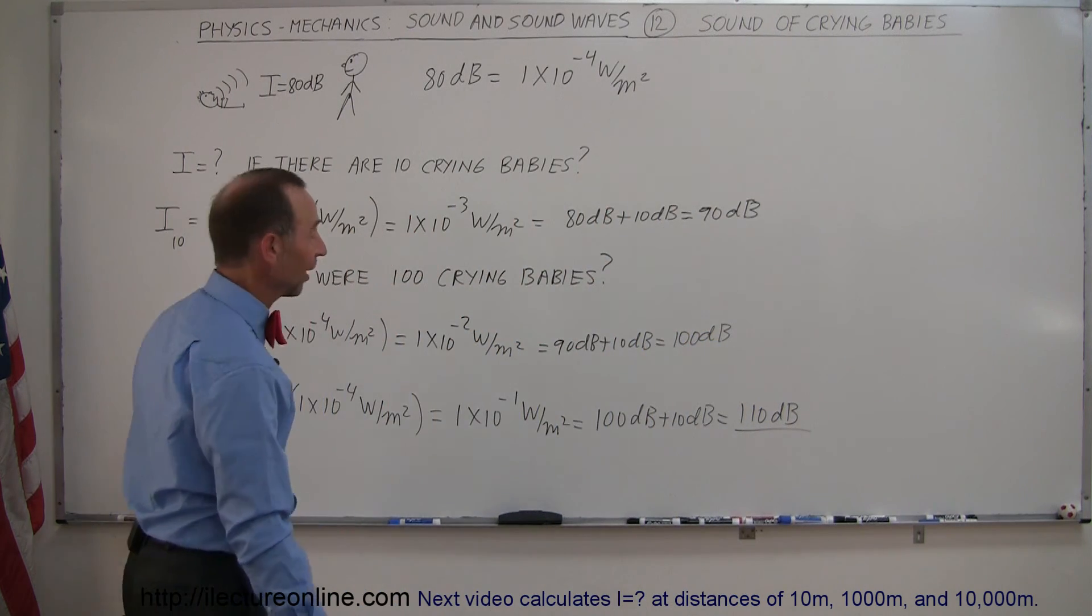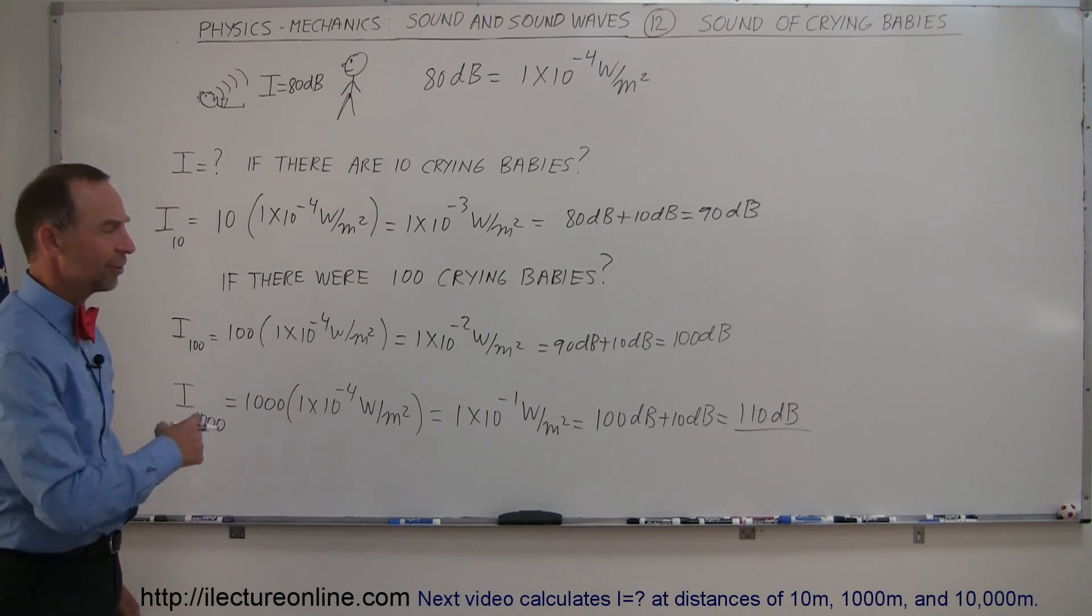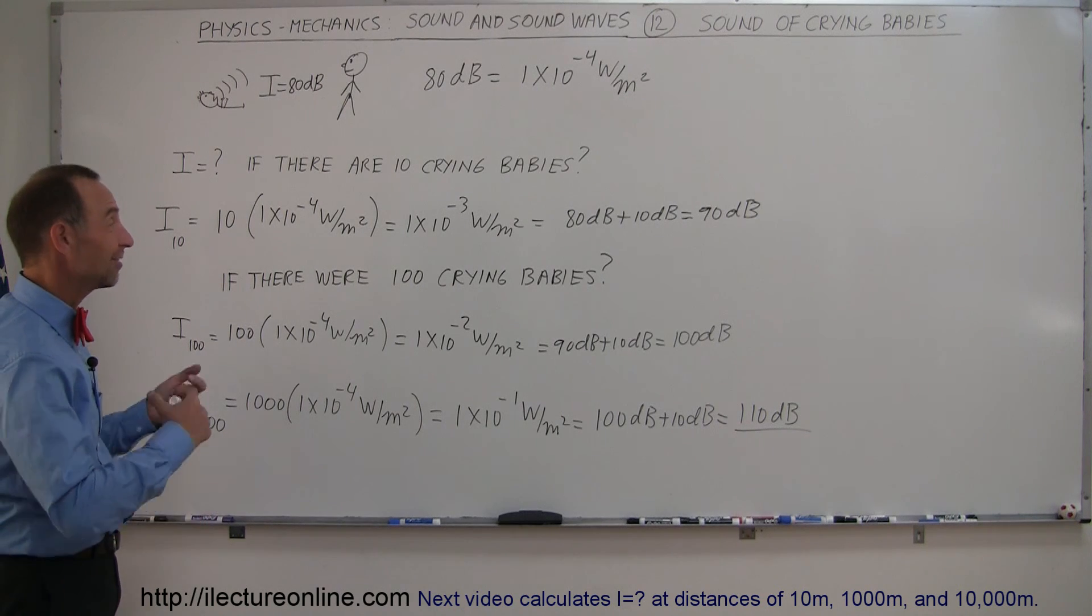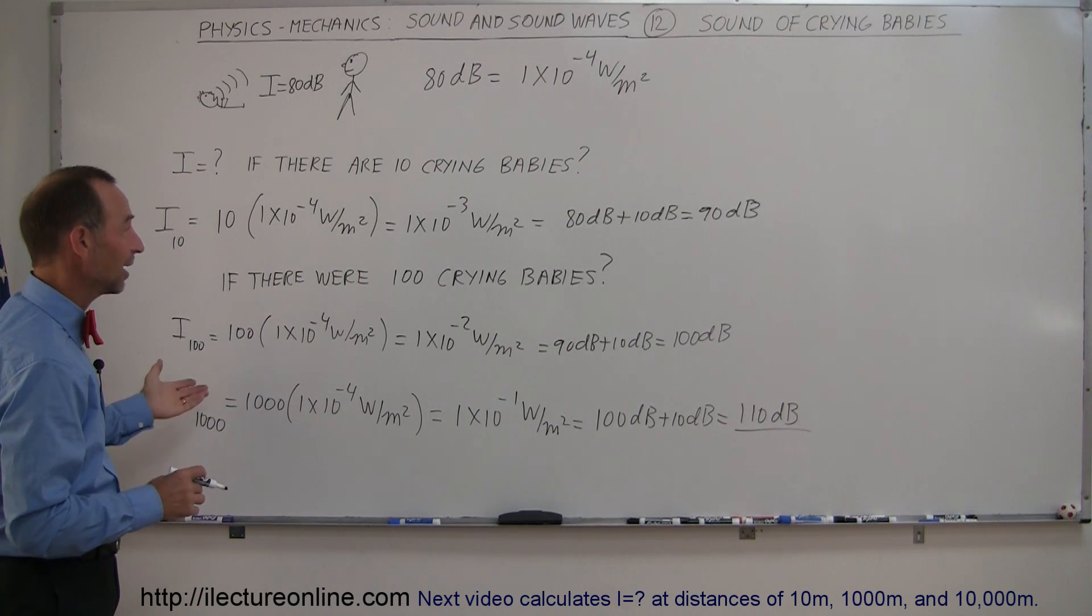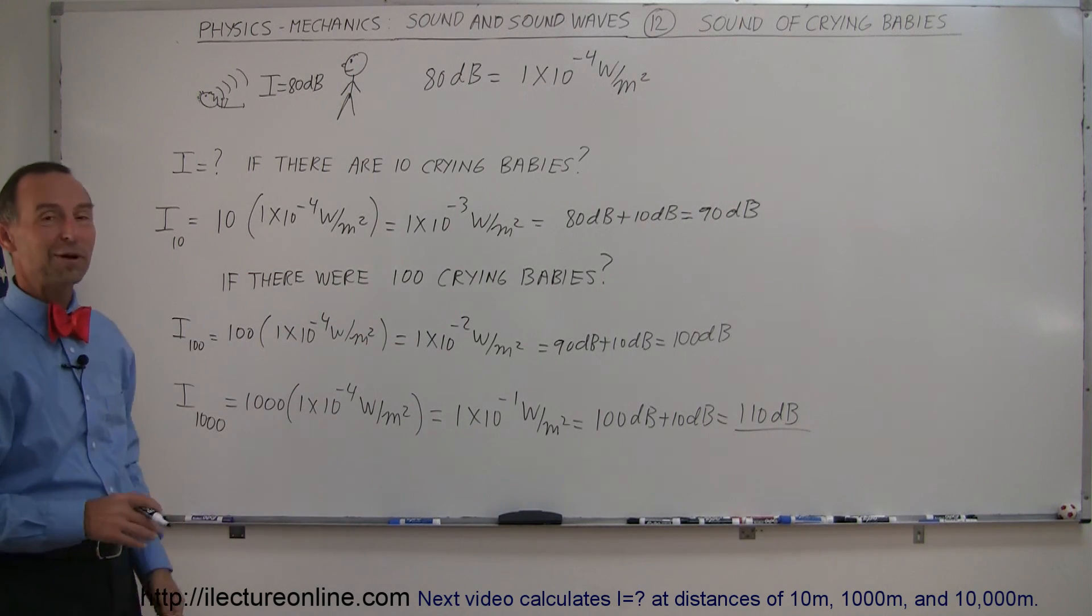And finally, if I asked you what is the sound intensity of 10,000 crying babies, that would be another 10 decibels, and that would be 120 decibels and so forth. So each time you increase the sound intensity by a factor of 10, you just add another 10 decibels, and here's an interesting way of looking at that.